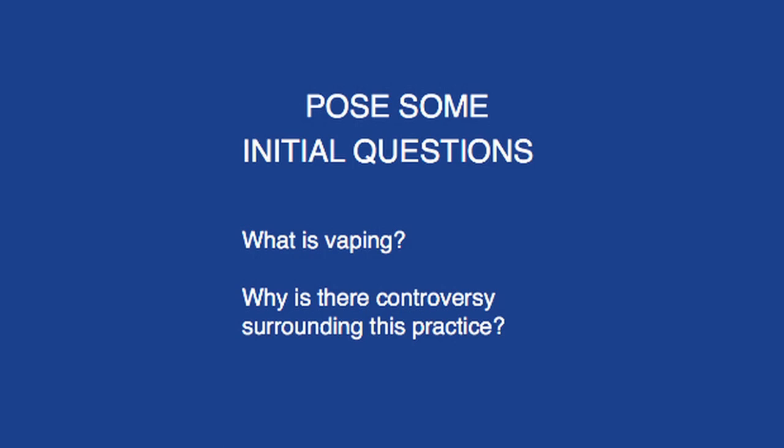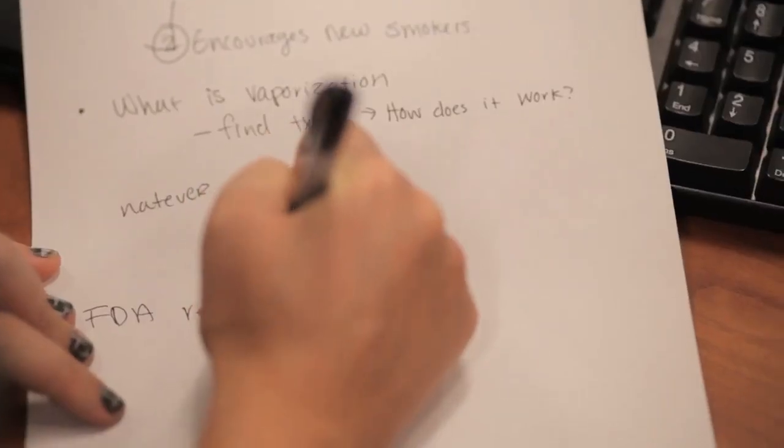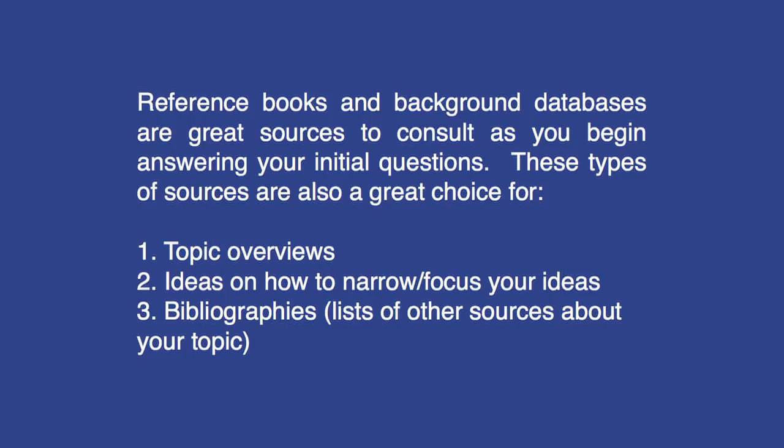Vaporizing. E-cigarettes. Look up your topic in the reference books and background databases available in and through the MJC Library and Learning Centers. These types of sources provide topic overviews that can help answer your initial questions, ideas on how to focus your topic and pose new questions, and they often contain bibliographies that can point you toward additional sources on your topic. You are surrounded by information that's going to help you answer those initial research questions.